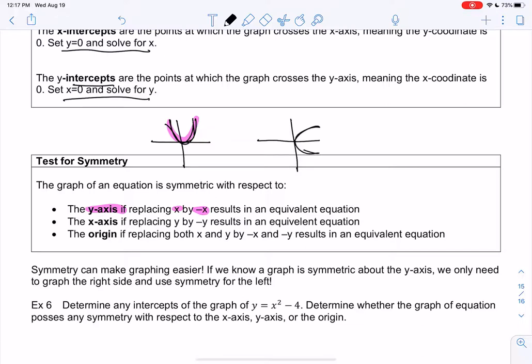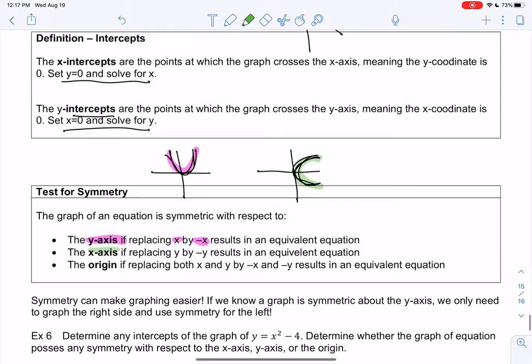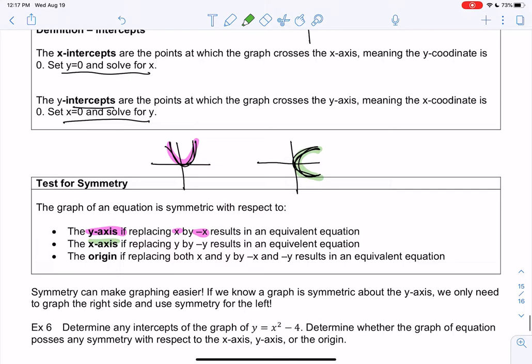Symmetric about the x-axis would be the same idea, but I fold the x-axis, and I get the same thing on both sides. So in this green graph, you'll notice, right, if I fold, the sides are the same. Top and bottom are the same. And we'll get that by replacing y with negative y. Y and negative y are giving us the same x value.